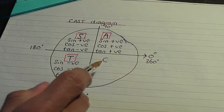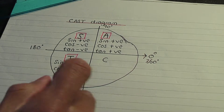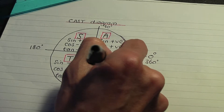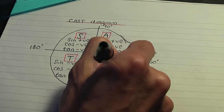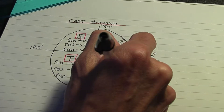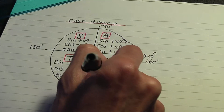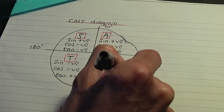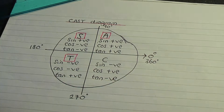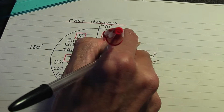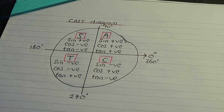And finally, in the fourth quadrant, C — we label that C because, yes, you guessed it, cos is positive. The remaining ratios, sine and tan, are negative. So only cos is positive. Let me encapsulate the C in red.